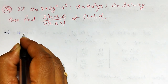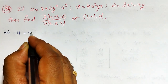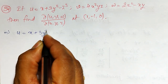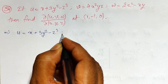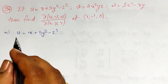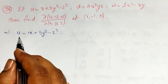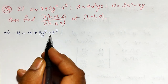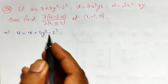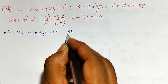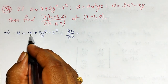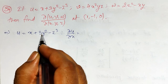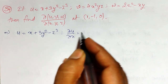Let me consider first u equal to x plus 3y squared minus z cubed, and find all three partial derivatives of u with respect to x, y, z. So ∂u/∂x — partial with respect to x — the first term becomes 1, and the other terms become 0, so ∂u/∂x = 1.